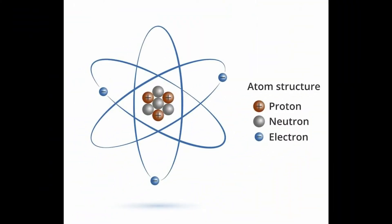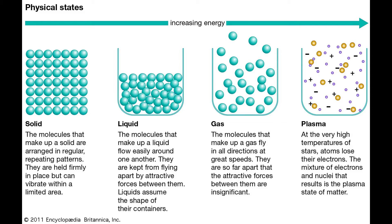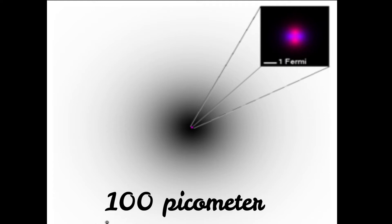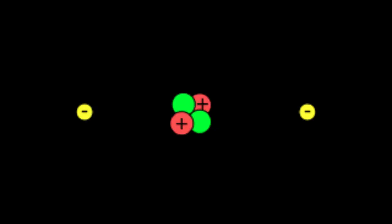An atom is the smallest constituent unit of ordinary matter that constitutes an element. Every solid, liquid, and gas is composed of neutral or ionized atoms. Atoms are extremely small, typically around 100 picometers across. Atoms are the basic units of matter and the defining structure of elements.